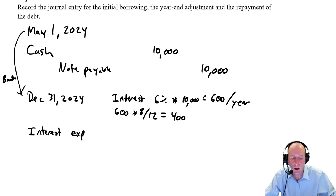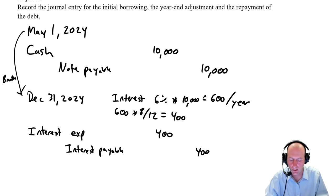Interest payable is a liability owed to a lender — different from accounts payable, which is a typical transaction with a vendor. The accountant records this adjustment because, even though the lender isn't calling for payment until July 2025, we must report the $400 interest liability to shareholders on our financial statements. This is what makes it an adjusting journal entry rather than a simple transaction.